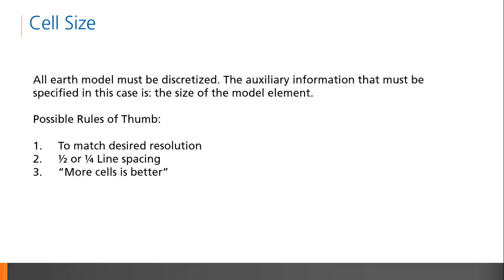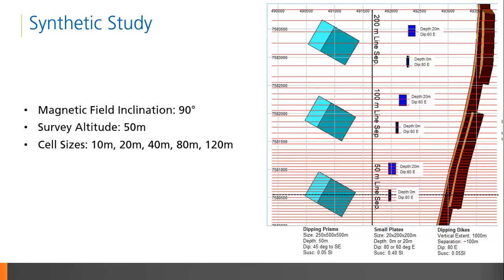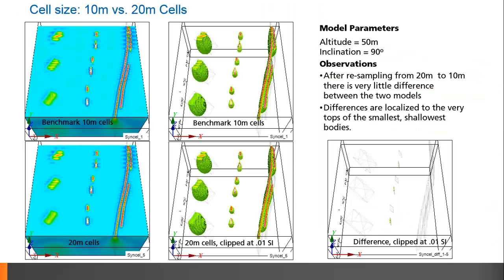To investigate the optimum model cell size, I present a synthetic model which includes dipping prisms, small plates, and dipping dikes at various depths with variable line spacing increasing to the north. We compute the TMI response of the synthetic model and then invert the data with varying cell sizes. I'll set my benchmark at 10 meter cells and compare the other models to this one.